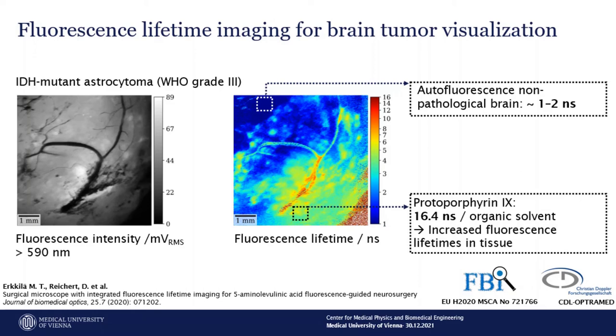Malignant tumorous tissue accumulates protoporphyrin 9 and the lifetime measured increases, which gives a nice contrast to visualize tumorous tissue within the human brain.